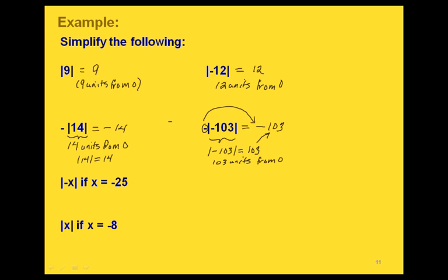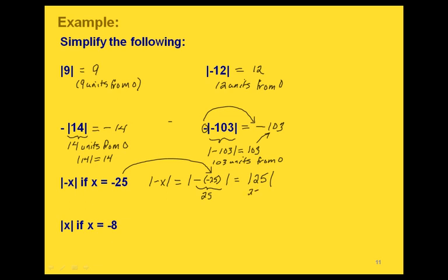We can also evaluate expressions using absolute value. We have the absolute value of negative x, and we can write this with parentheses like before. Where x was, we put parentheses and fill in the value given for x, which is negative 25. If we have two negatives together — negative negative 25 — they cancel each other out, giving us just 25 inside the absolute value bars. Then the absolute value of 25 is 25 units from 0, so we end up with 25.